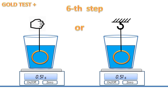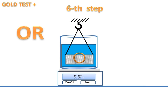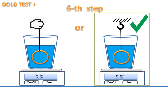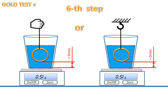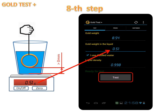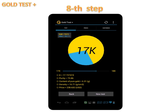Then dip the gold into the water. Using a fixed stable support is more suitable than holding the gold by hand. Make sure the golden item is not touching the bottom of the cup. As you see, the weight value on the scales changes from zero. Input the new value in the second field of the app and press the test button. That's it — the test is done, see the result.